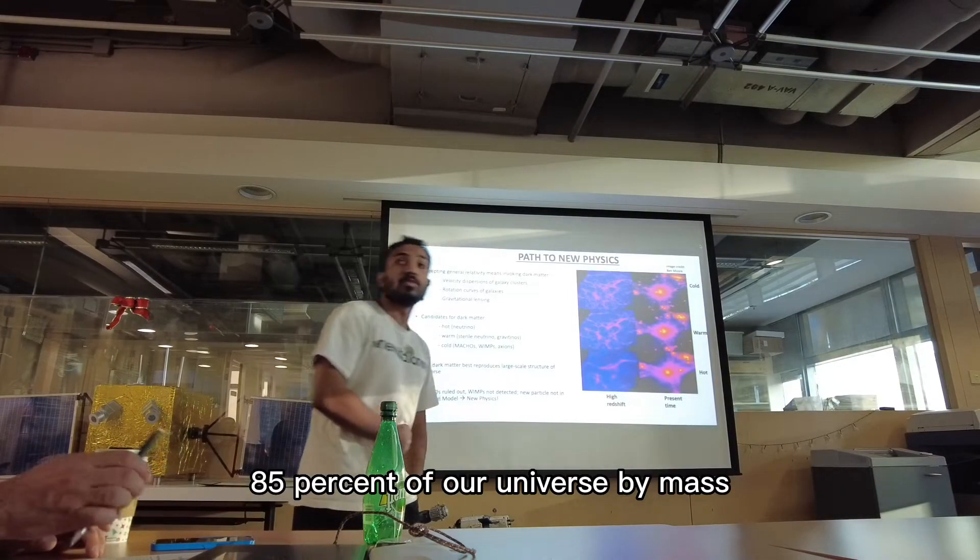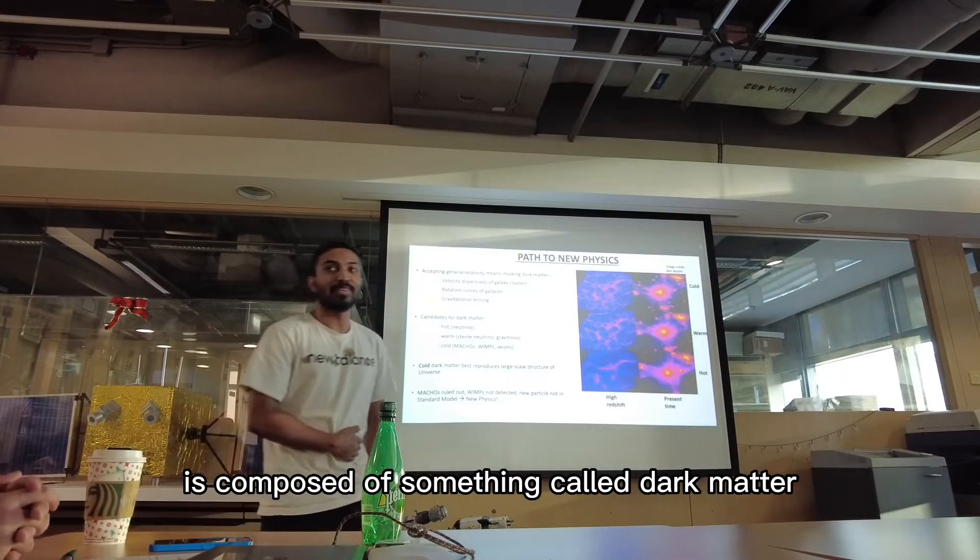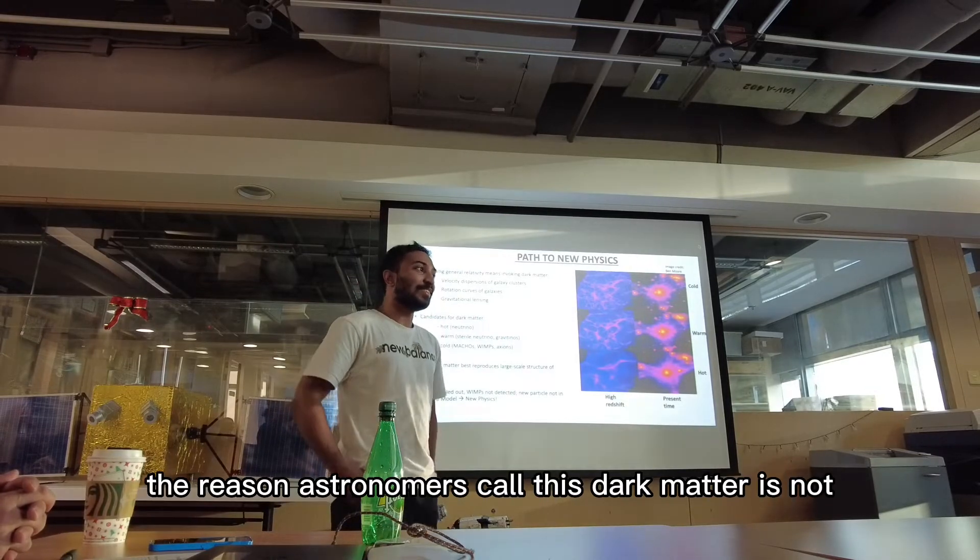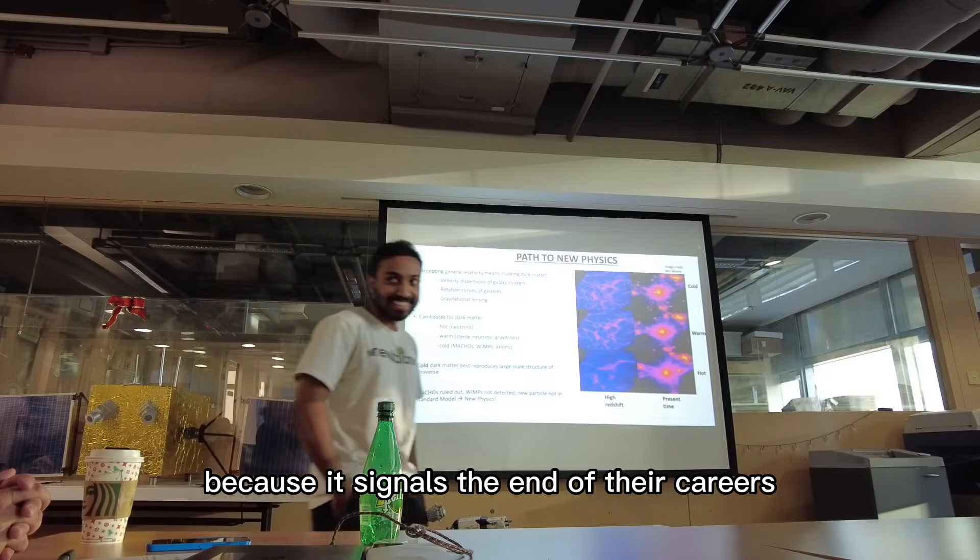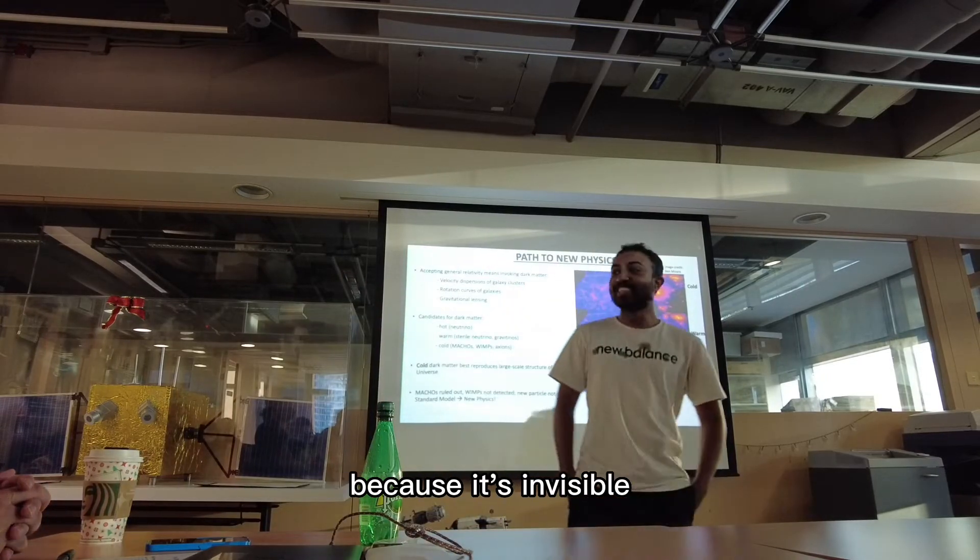So 85% of our universe by mass is composed of something called dark matter. The reason astronomers call this dark matter is not because it signals the end of their careers, but because we can't see it, because it's invisible.